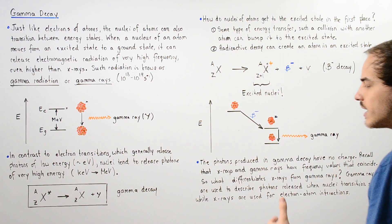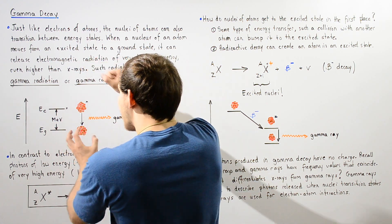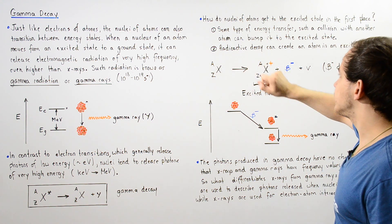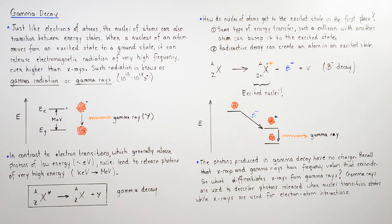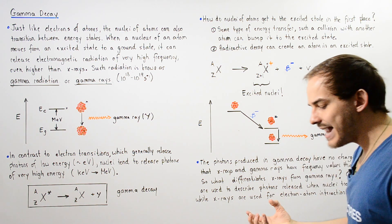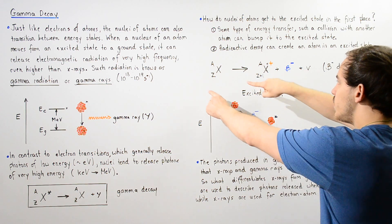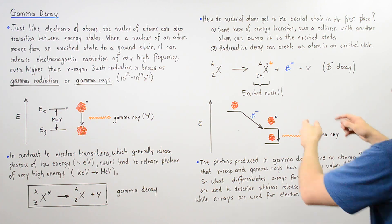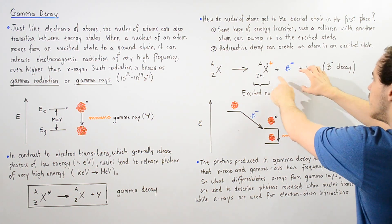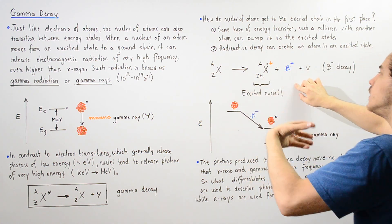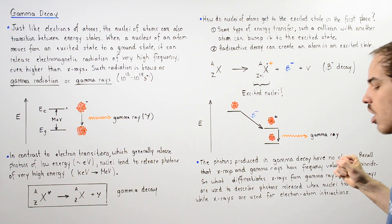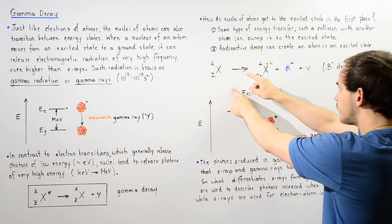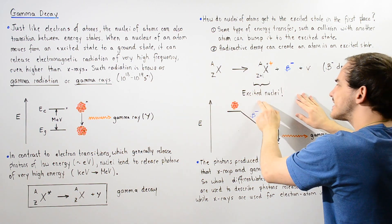Another way by which a nucleus can jump to the excited state is through radioactive decay. Radioactive decay can create an atom in the excited state. For example, in beta negative decay, some atom undergoes beta decay, releasing an electron and a neutrino, forming an atom with one more proton. Usually when this takes place, the newly formed atom is in its excited state.